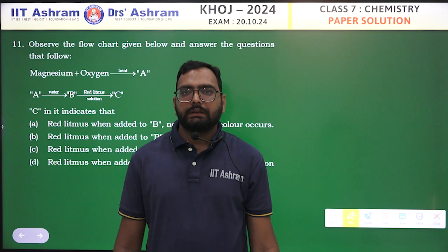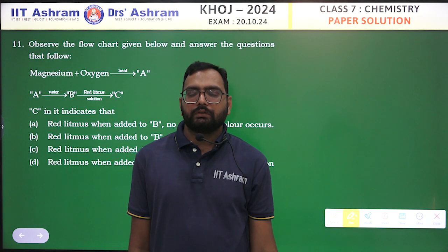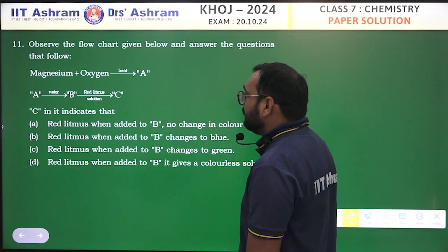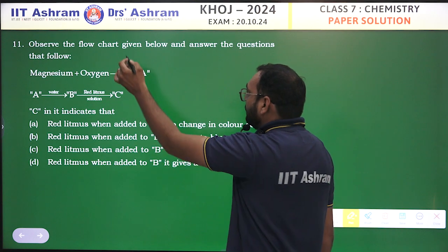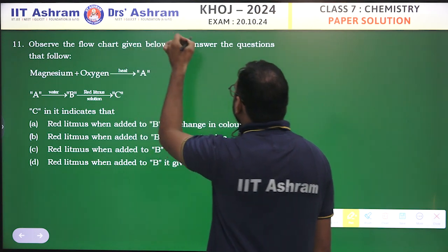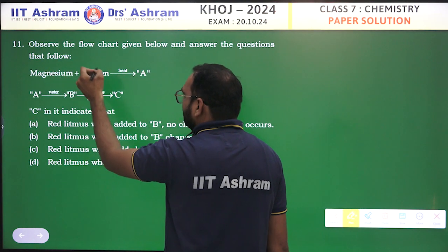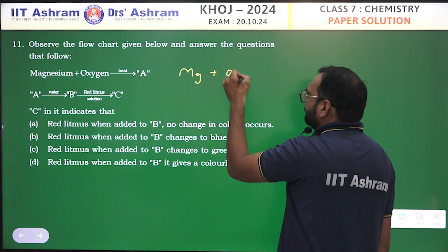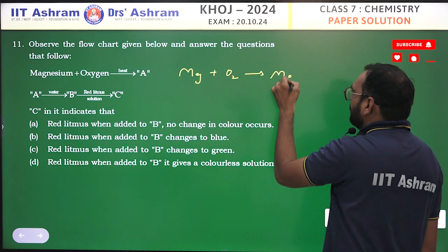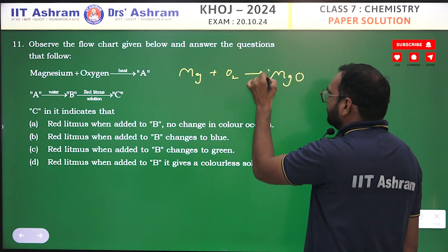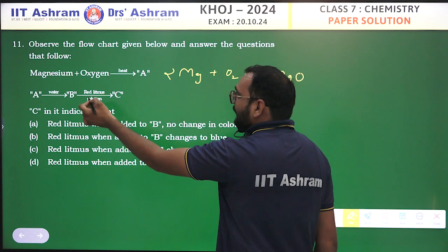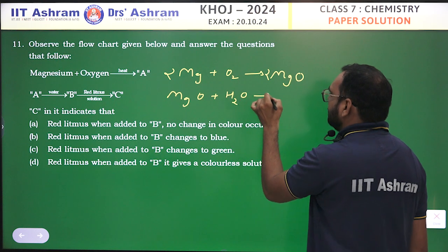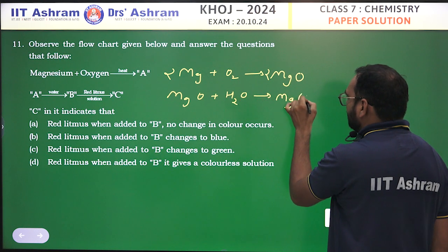Hello students, let's see the chemistry solutions for class 7th, question 11. Observe the flow chart given below and answer the questions that follow. Magnesium plus oxygen with heat gives A, so when magnesium reacts with oxygen it gives MgO, magnesium oxide. Now this A is dissolved in water, that means MgO is dissolved in water to give magnesium hydroxide, Mg(OH)₂.